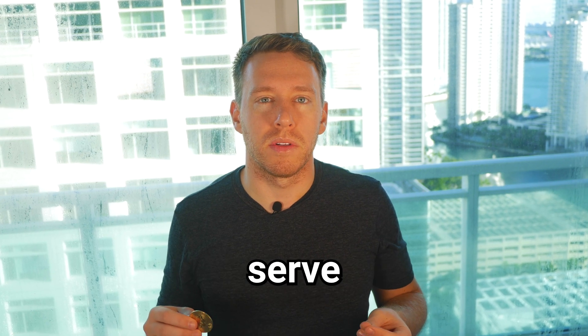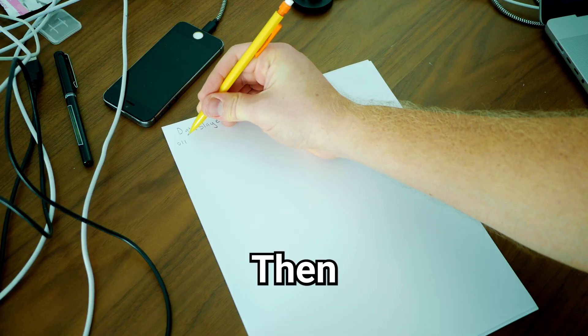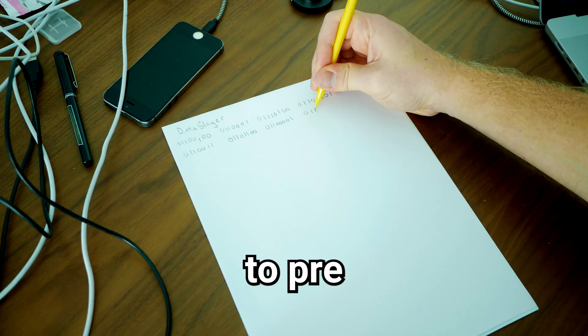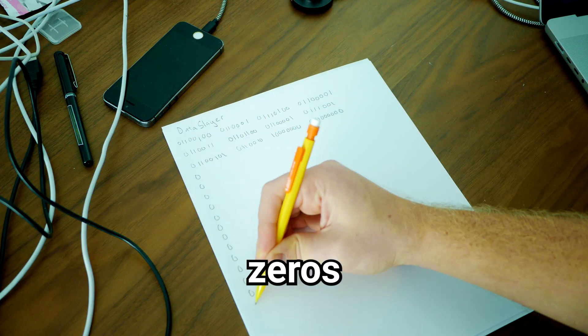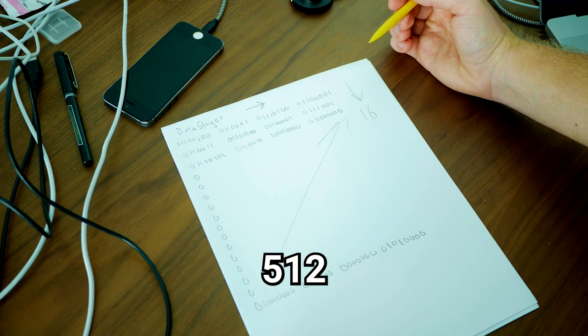First I chose a phrase that would serve as our hashing seed. Then I converted it to binary. Then to preprocess, you append a 1 and the length of the original message. Then fill it with zeros until it's a multiple of 512.